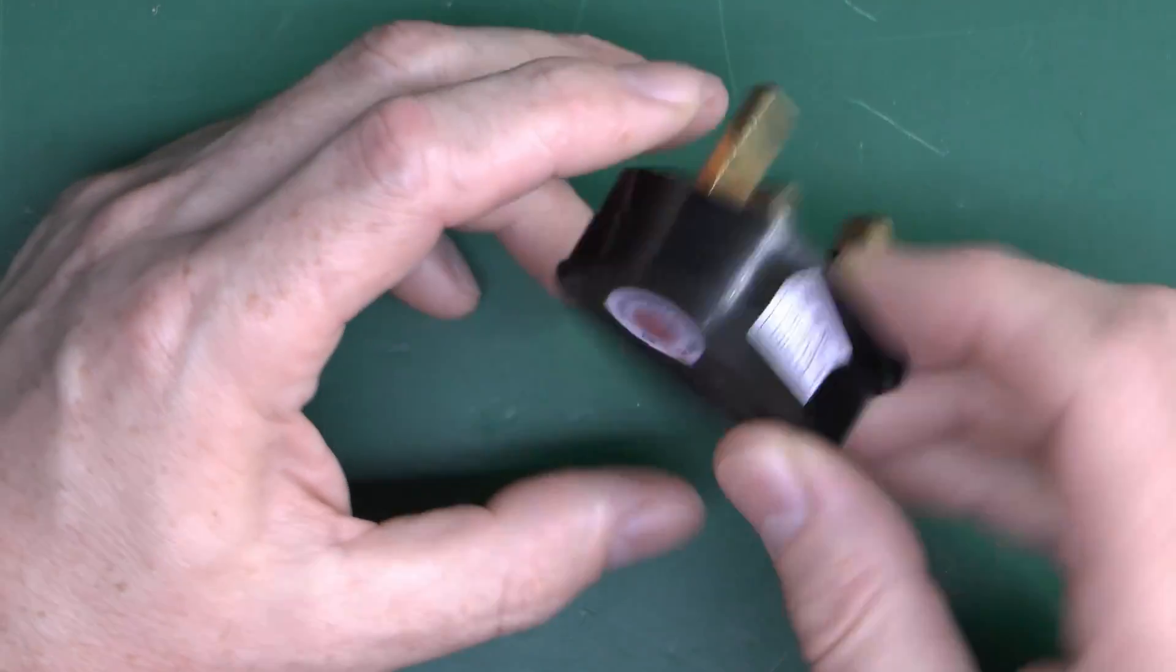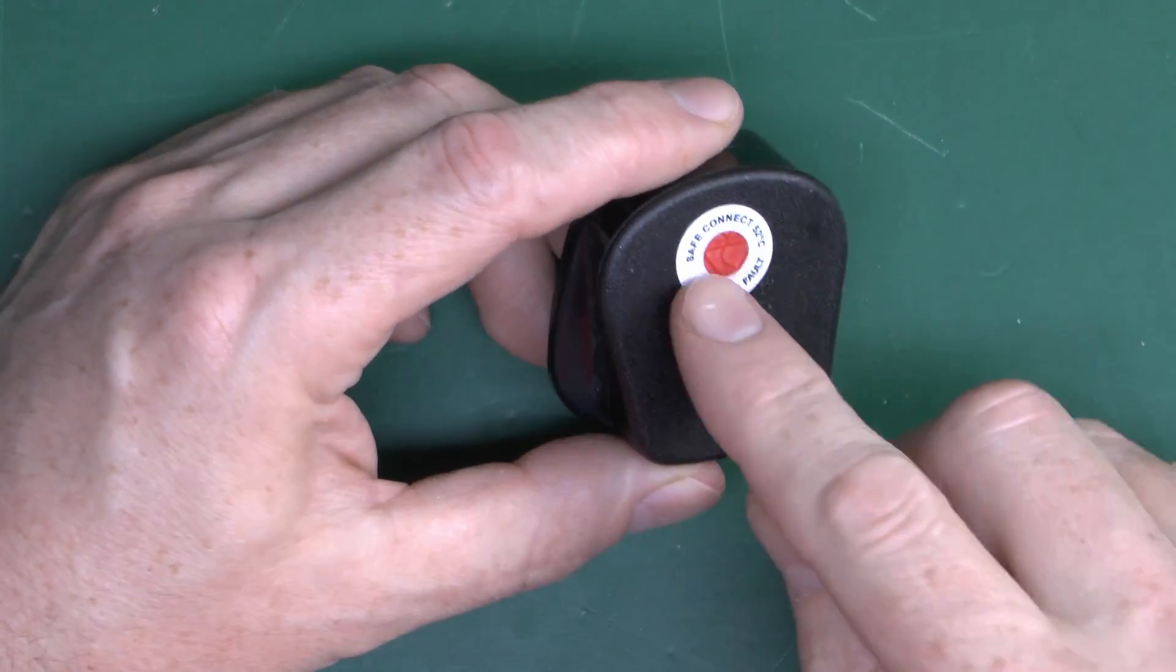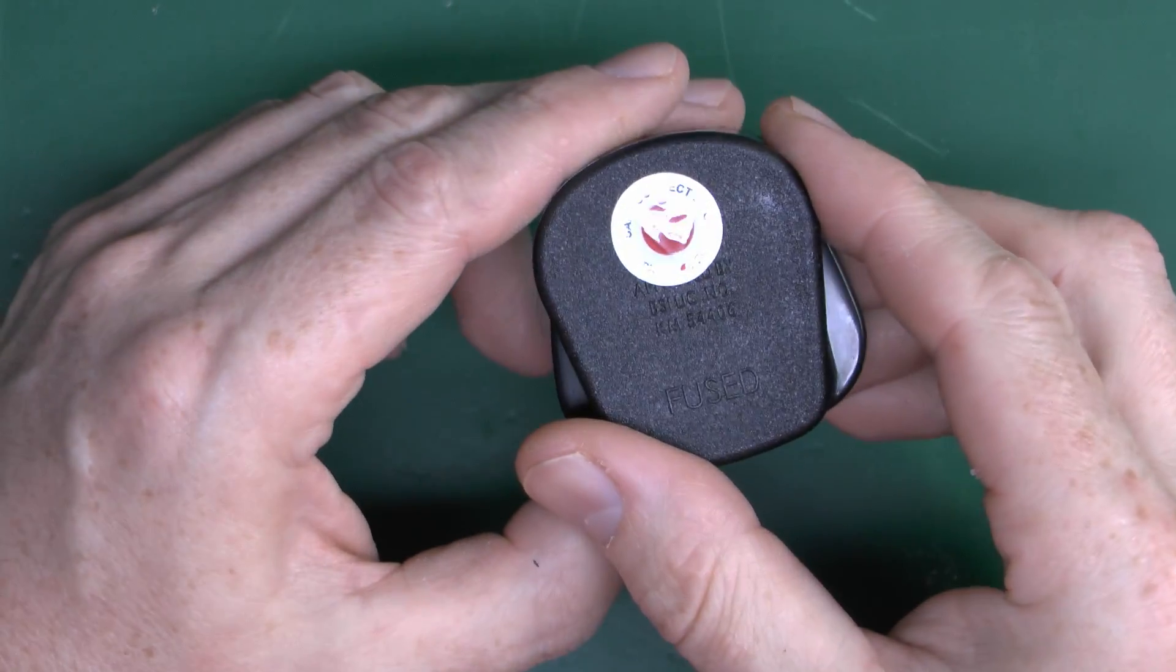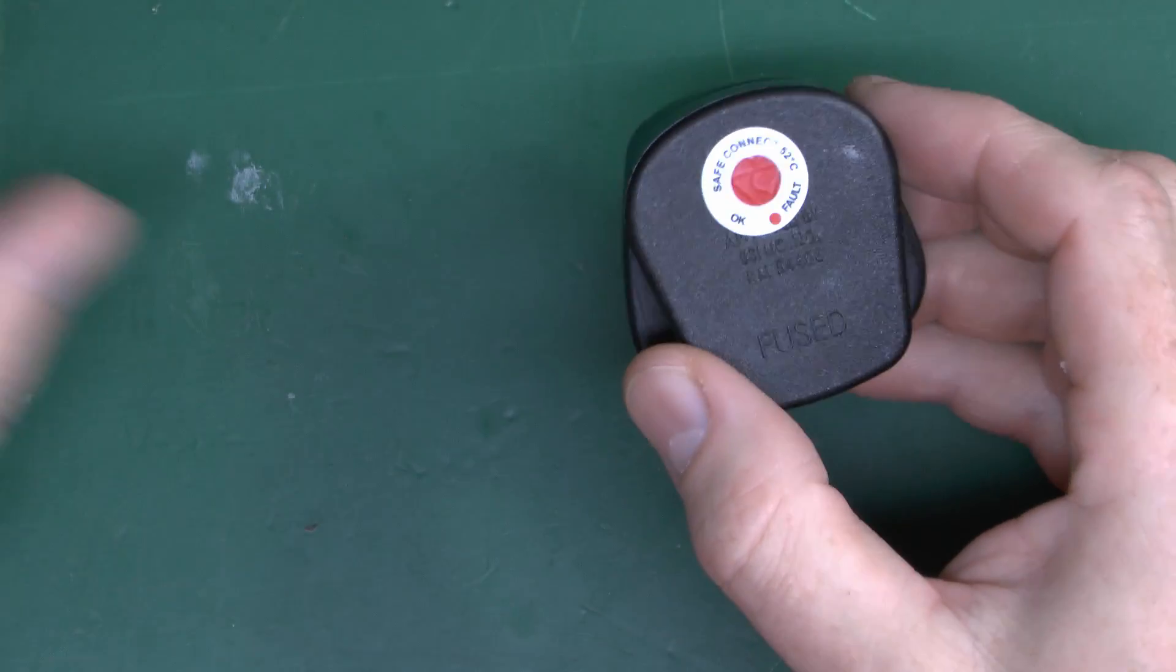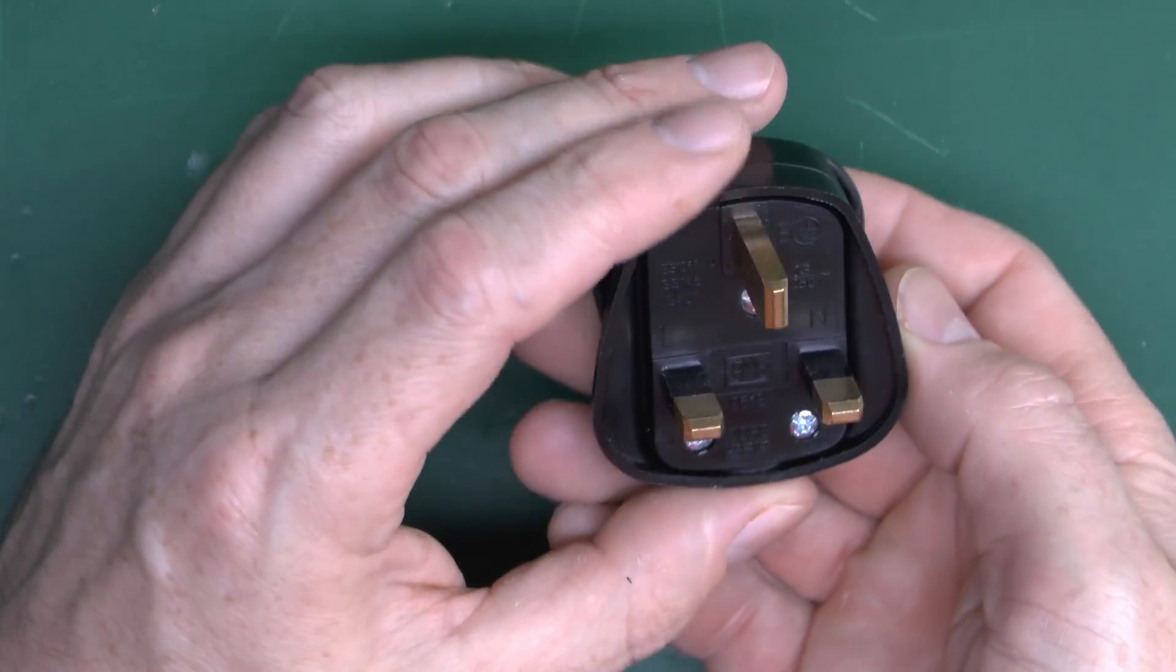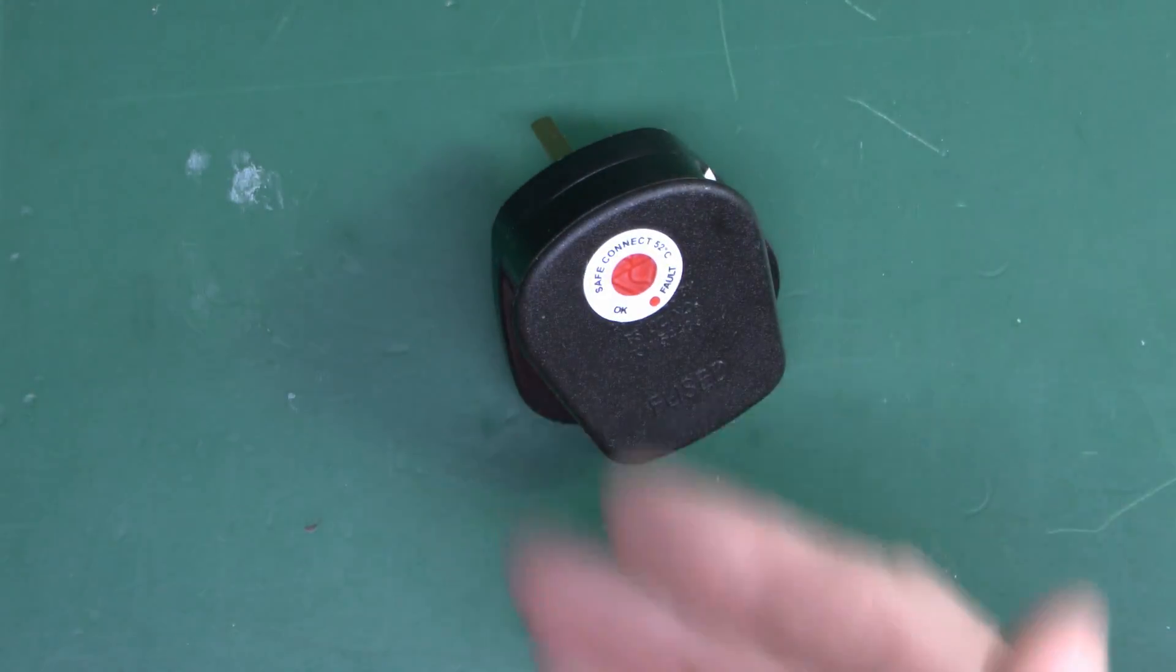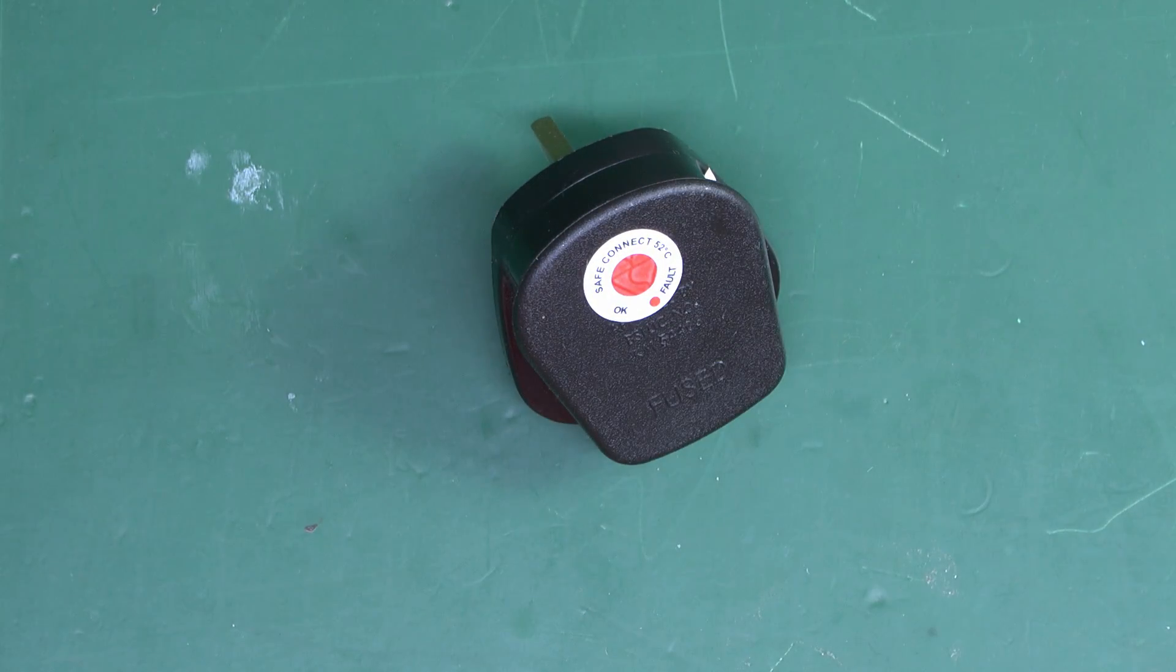So that's basically how those work. A very simple idea, and it just gives that visual indication of something actually having something wrong with it. They do make these for cables and things as well, so it might be worth considering in certain applications. It does require that someone is actually going to look at these and think, oh something's wrong with it, so not necessarily going to be useful if the plug is hidden away out of sight.